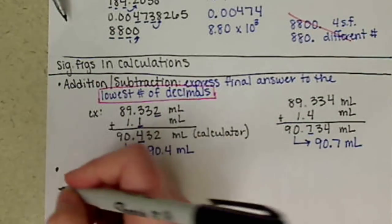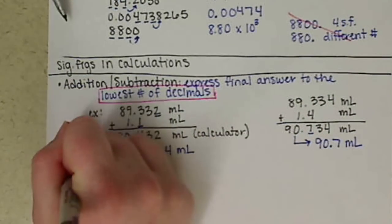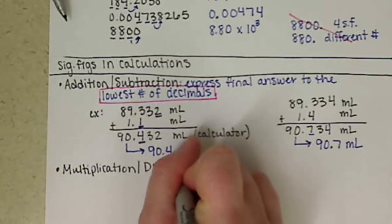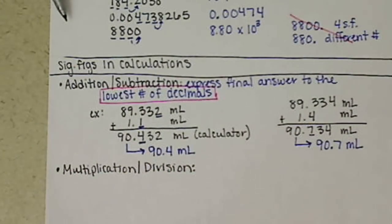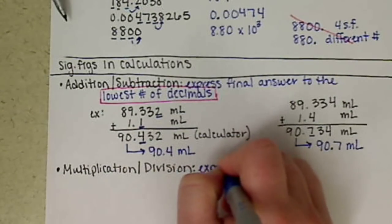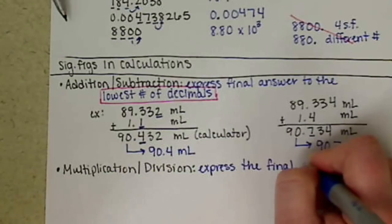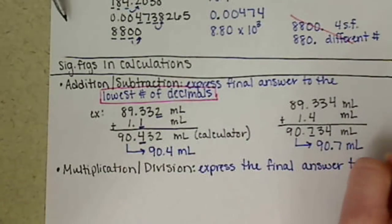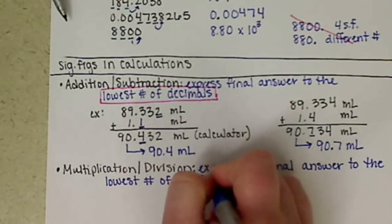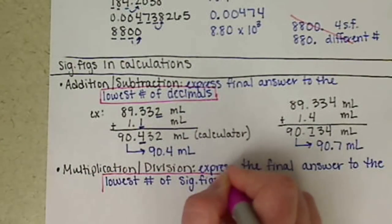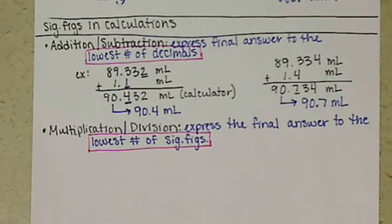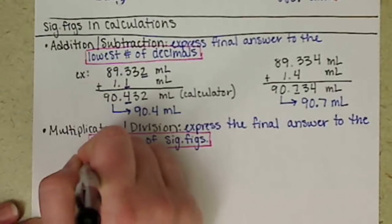Our rules change when we look at multiplication and division. For multiplication and division, we want to express the final answer to the lowest number of sig figs.